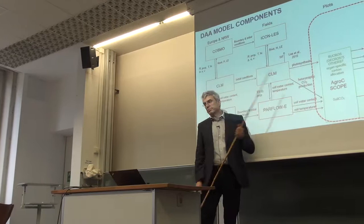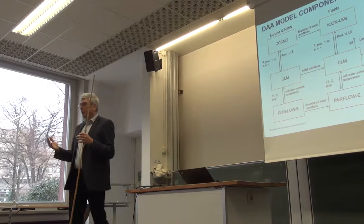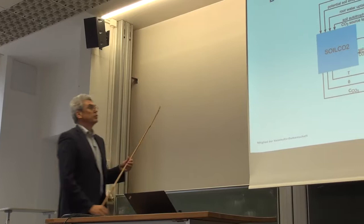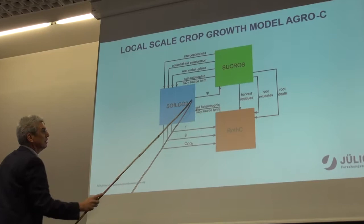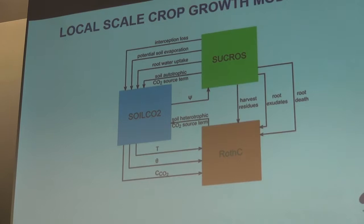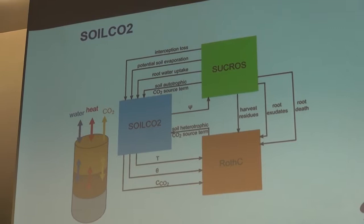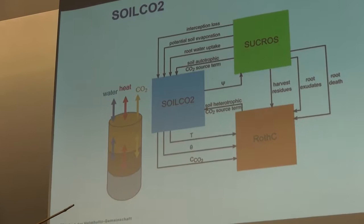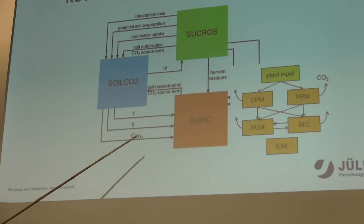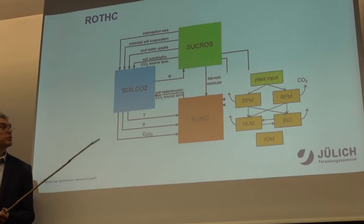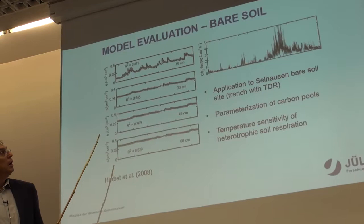I'll explain AgroSea, which we are using in AgroSEA. The AgroSea model has three components: the subsurface part calculates water, heat, and CO2 fluxes in a 1D approach; this is linked to a carbon model with different pools where carbon is distributed and can also produce CO2.